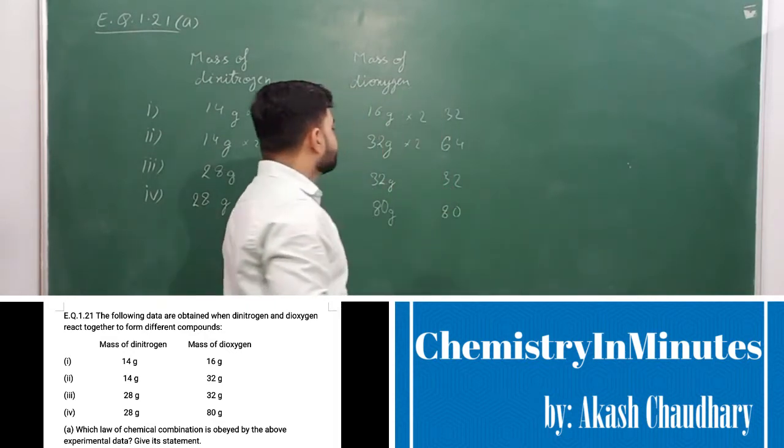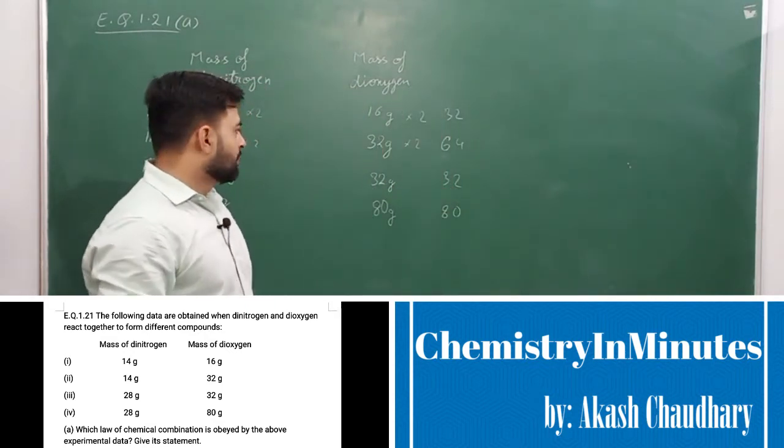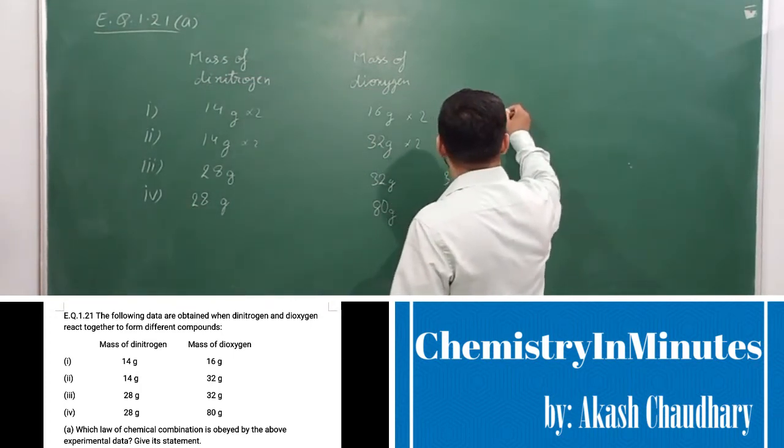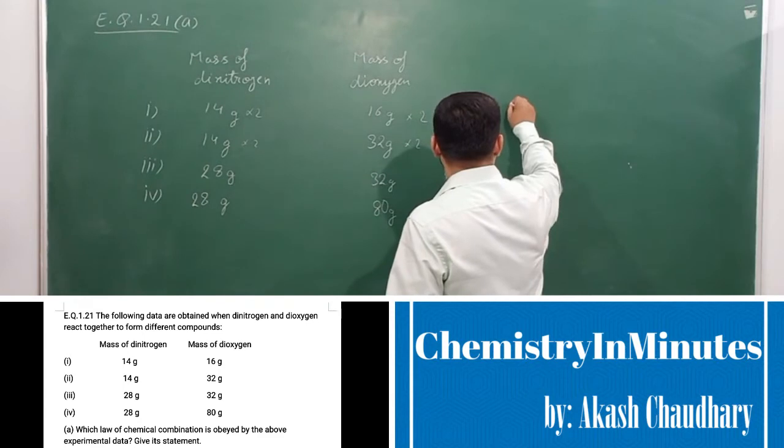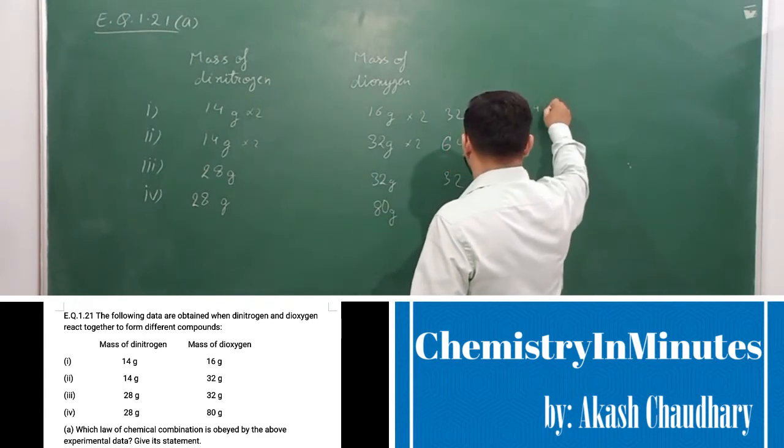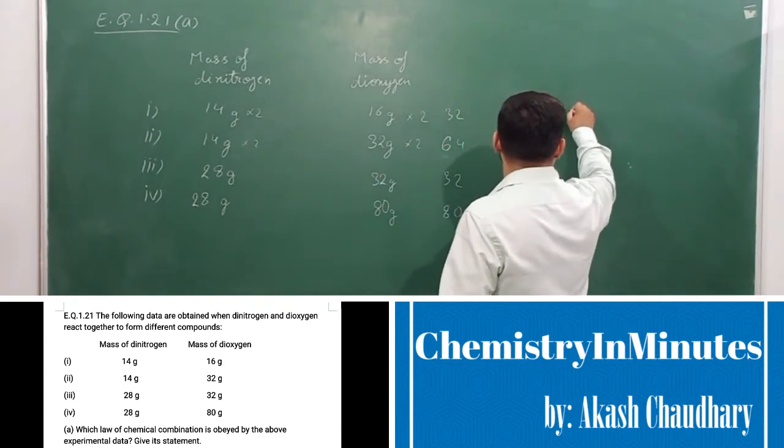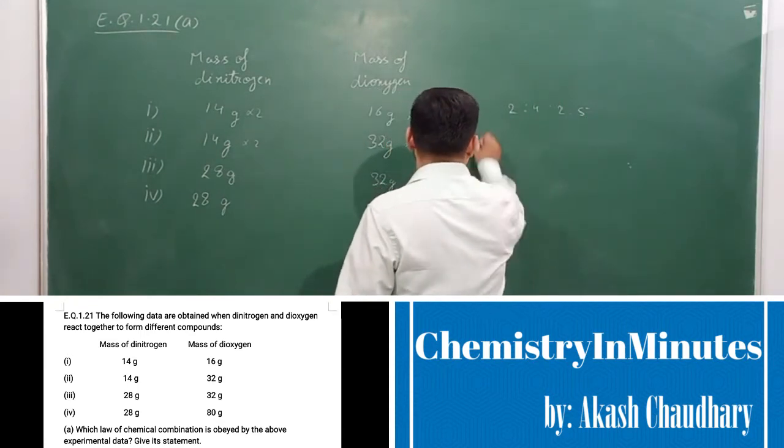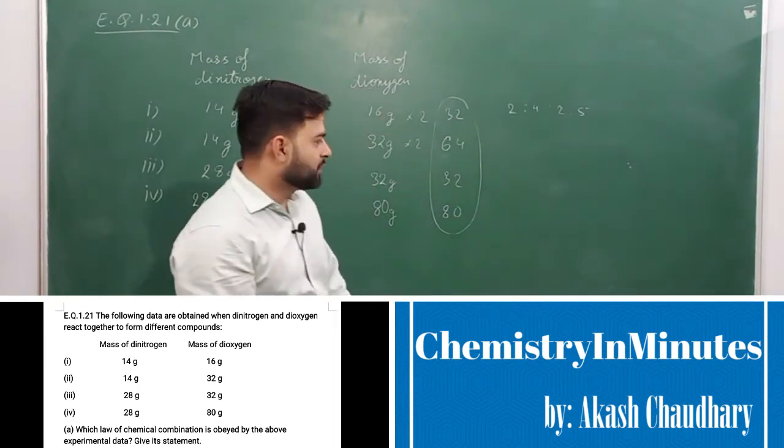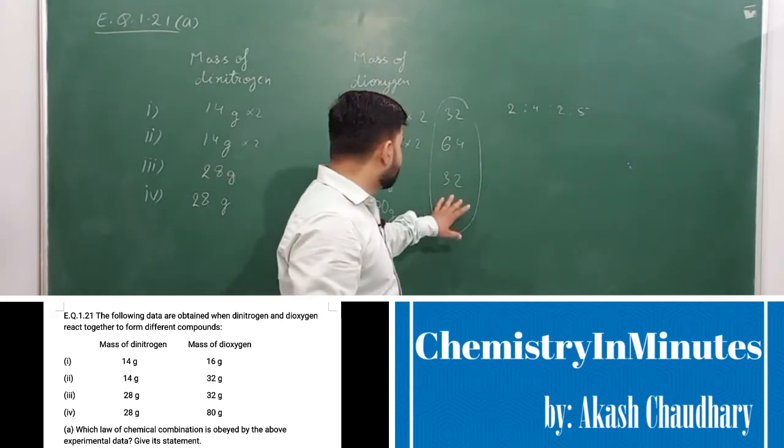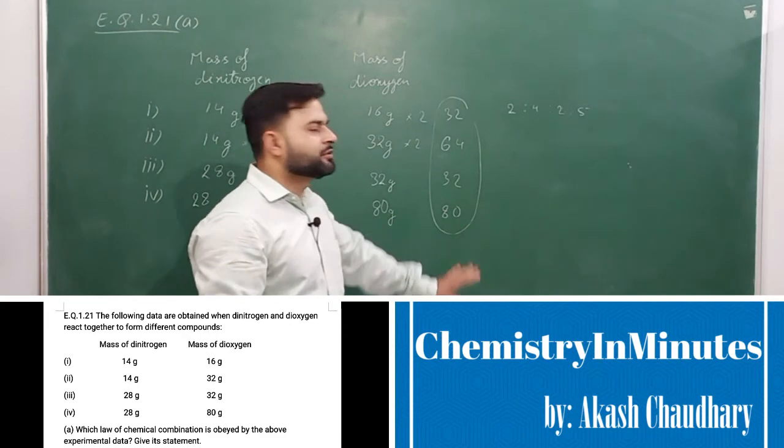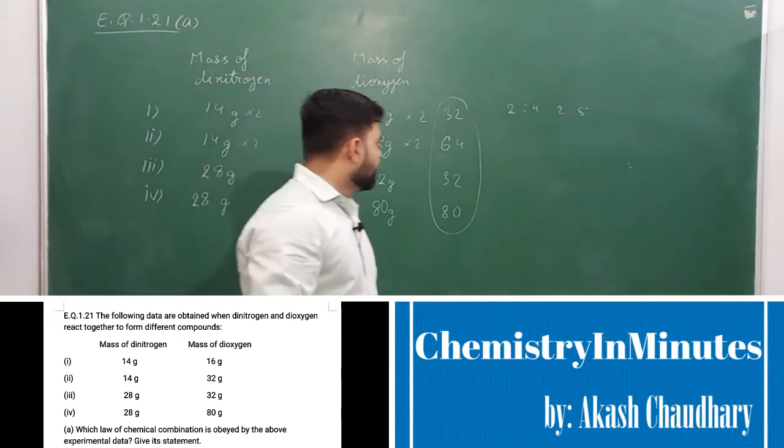Now, this mass can be represented as simple ratio like 2 is to 4 is to 2 is to 5, because these all are multiples of 16. 16 into 2 is 32, 16 into 4 is 64, 16 into 2 is 32 and 16 into 5 is 80.